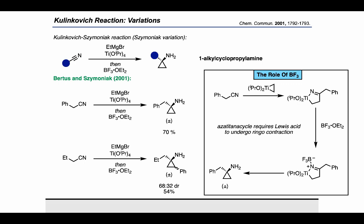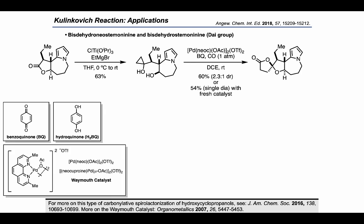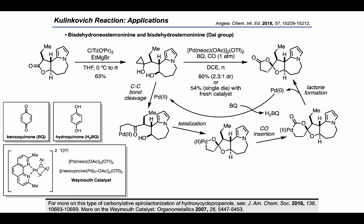Returning to the parent reaction, in a recent example the Dye group employed a Kulinkovitch reaction in their synthesis of bis-dehydroneostomoninine and bis-dehydrostomoninine. Standard Kulinkovitch conditions did not provide good yields, but using chlorotriisopropoxytitanium and ethylmagnesium bromide — conditions pioneered by the Corey group — they were able to form the desired cyclopropanol. The authors then leveraged the cyclopropanol motif using the Weymouth catalyst, benzoquinone, and carbon monoxide to carry out a carbonylative lactamization proceeding through palladium-mediated C–C bond cleavage, CO insertion into a six-membered palladacycle, and reductive elimination, with benzoquinone oxidizing Pd(0) back to Pd(II).